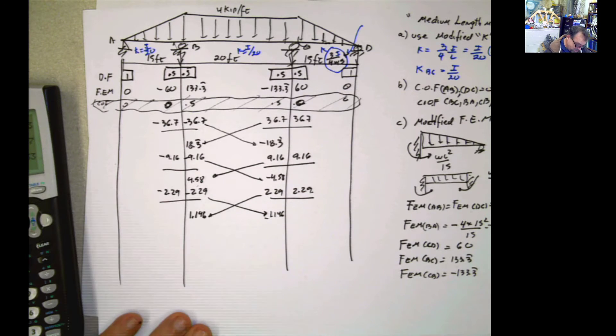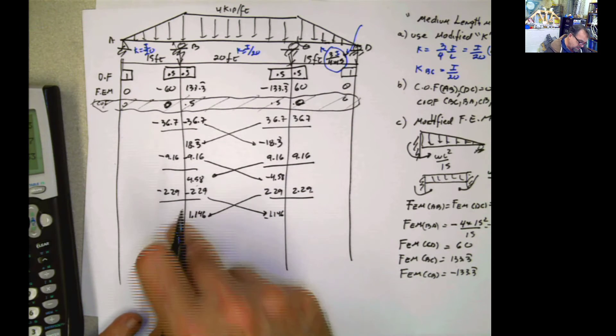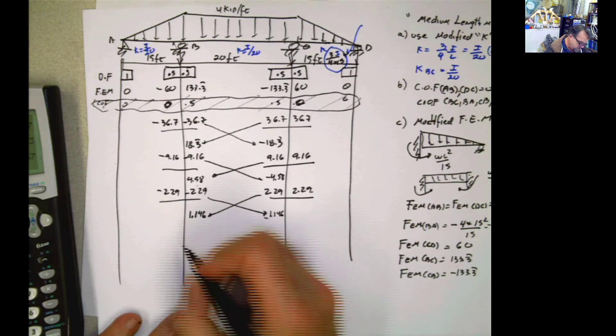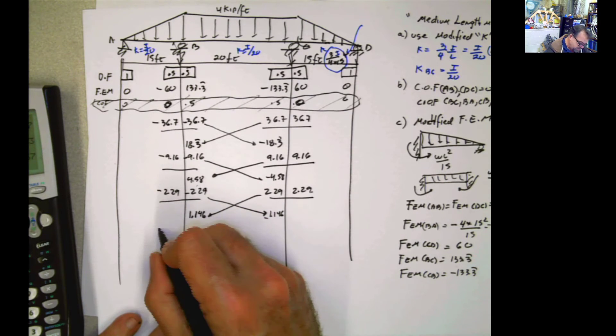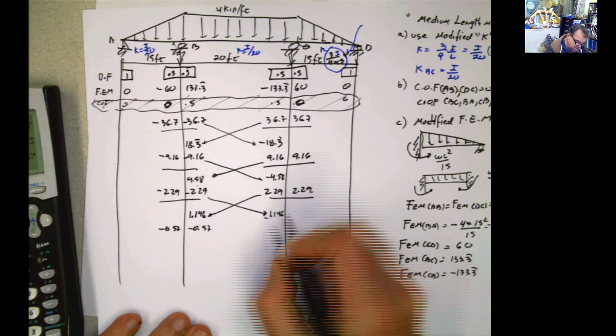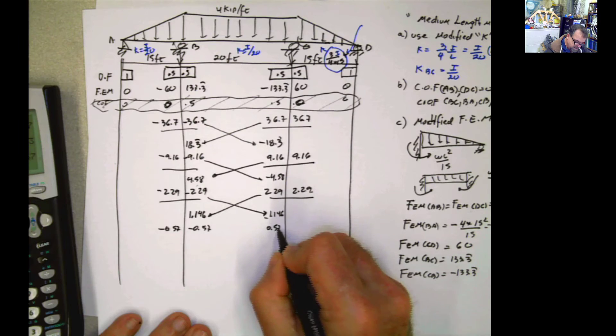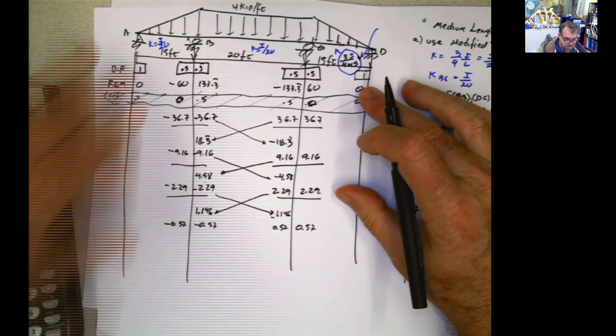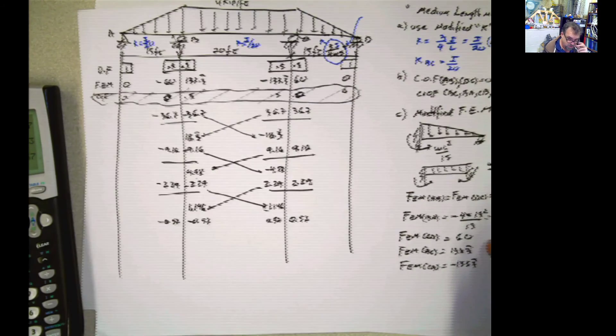And if I need to balance this, I need negative 1.114 here. So it's going to be negative 0.57, negative 0.57, positive 0.57, and positive 0.57. And you see, I didn't touch this, because I used the modified factors for everything.